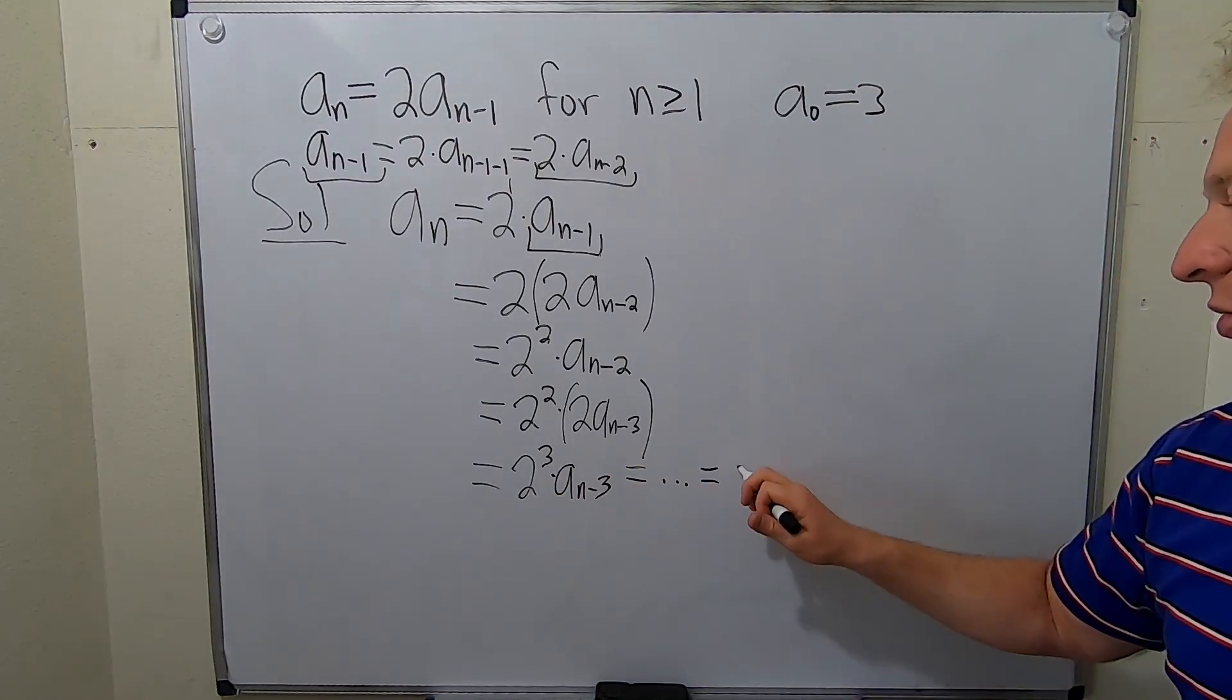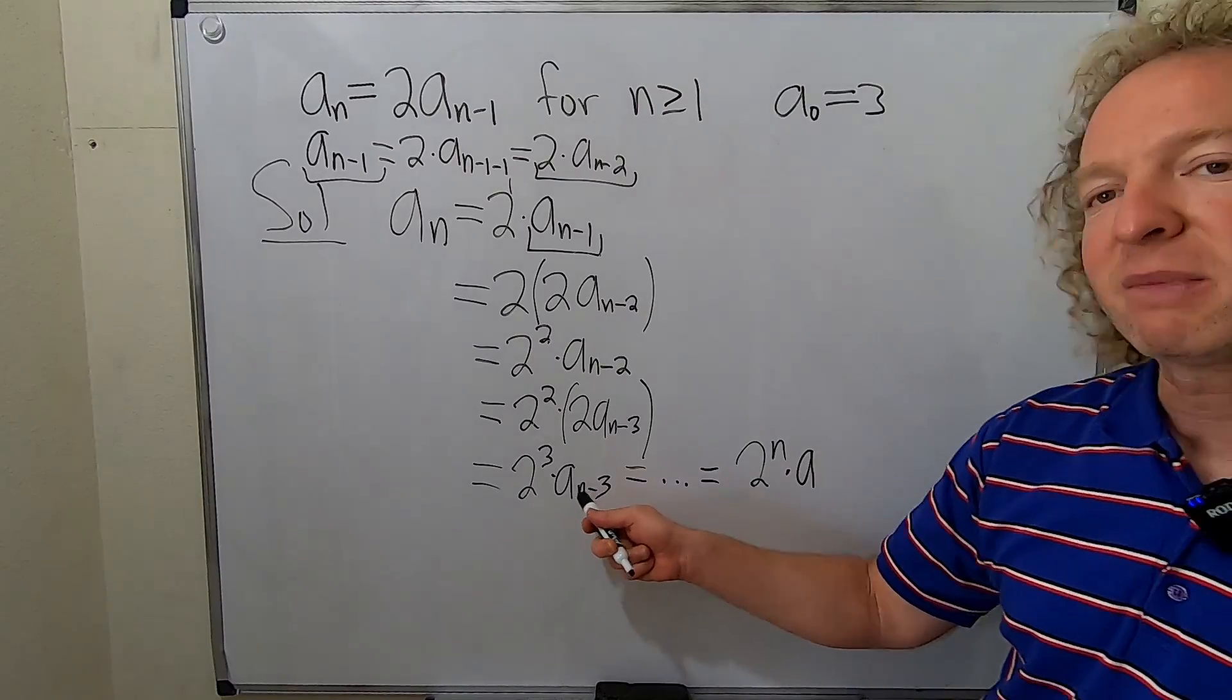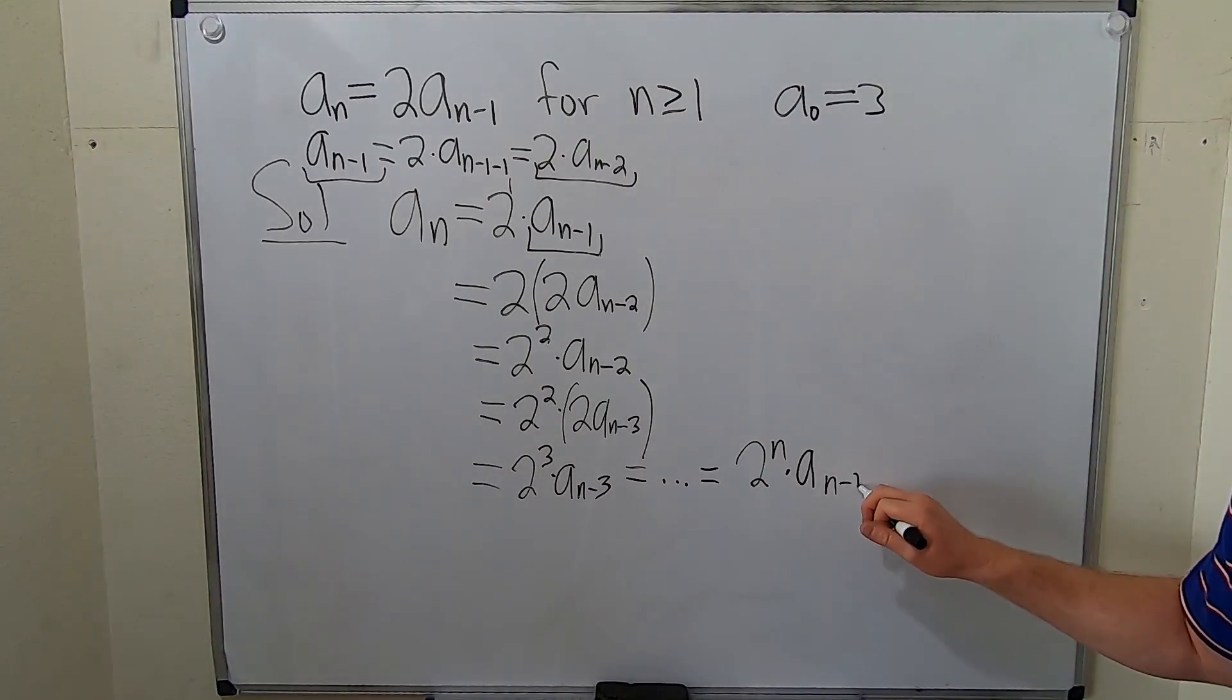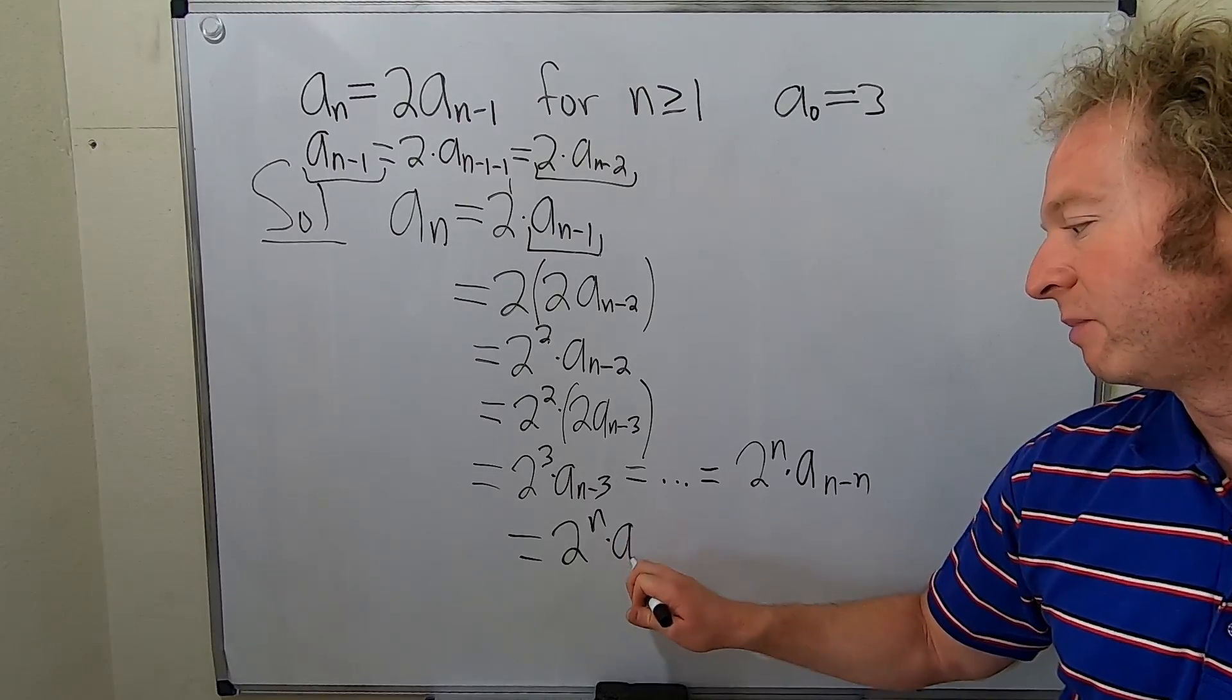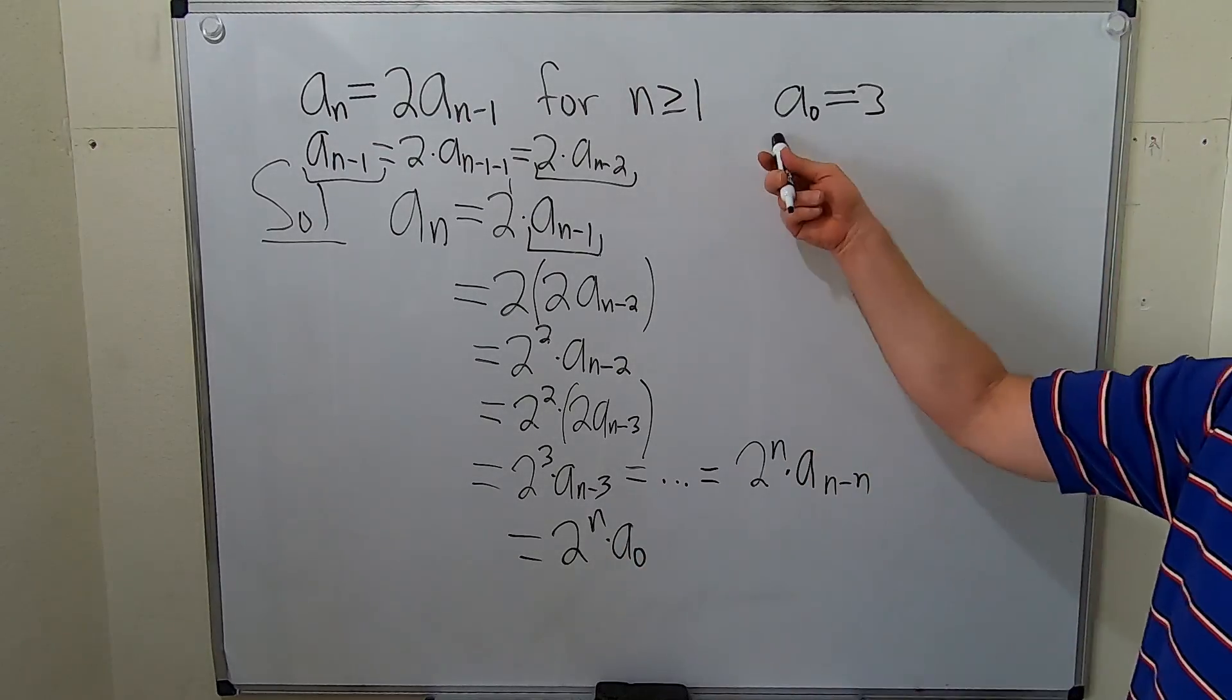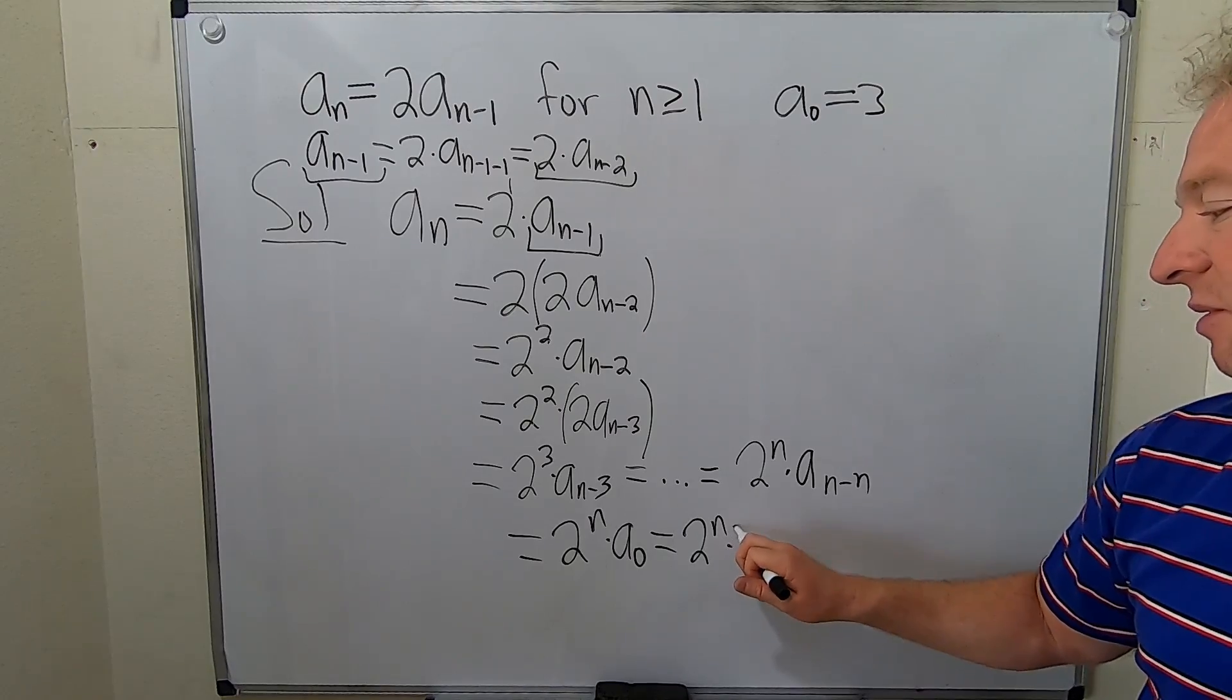So this is eventually equal to 2^n times a_{n-n}. But that's going to be 2^n times a_0. And we know a_0 is 3. So this is equal to 2^n times 3. That's beautiful.